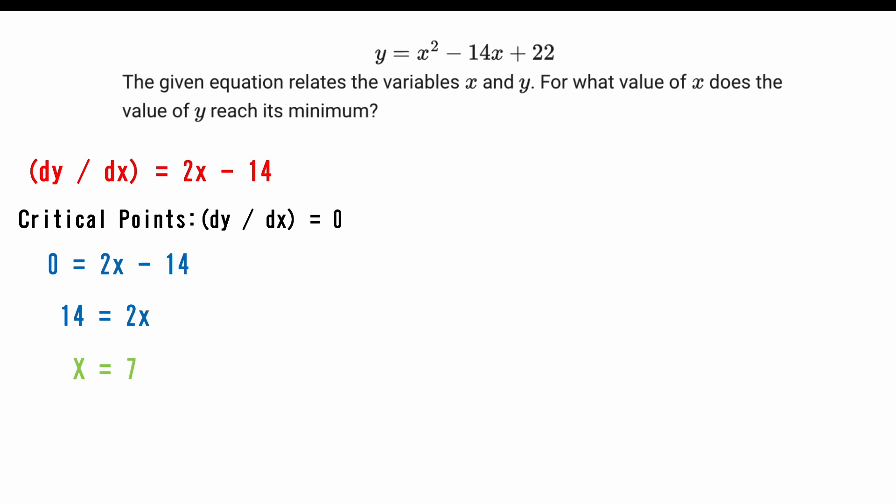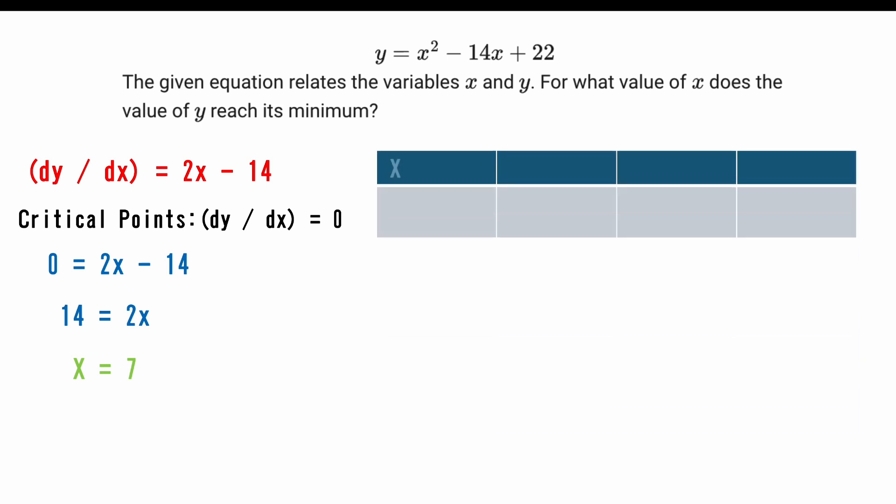But we're not done, because we have to prove that this is a minimum or a maximum. So we create this table. We're going to have x, and we're going to have dy/dx. And we're going to have x inputs going from negative infinity to 7, 7, and 7 to infinity.